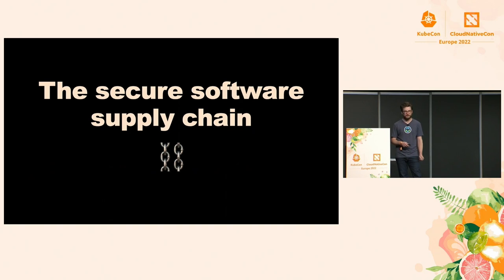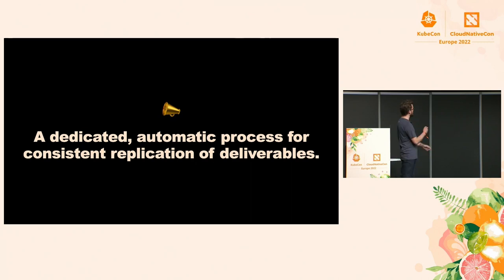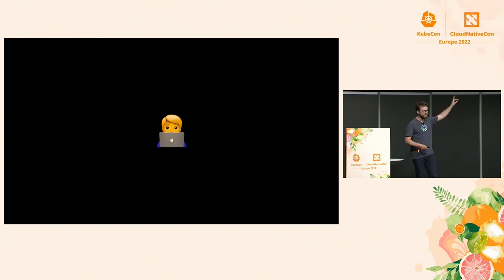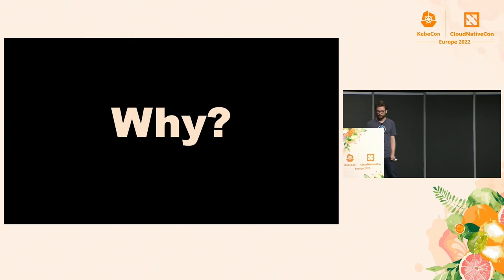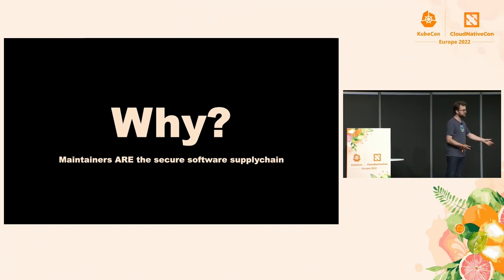Next, let's talk about the secure software supply chain. The way I define it in this talk: it's a dedicated, automatic process for consistent replication of deliverables. But we also need to talk about the maintainers of these projects. I think oftentimes we forget about the people as part of the secure software supply chain. There's a lot of interesting things happening with SIG Store and SBOMs within Kubernetes and CNCF, but we forget about the people. Maintainers are the secure software supply chain — without maintainers, it all falls apart.